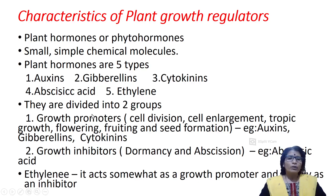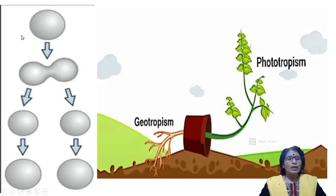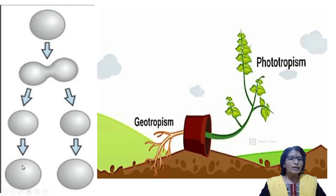Plant hormones are divided into two groups: growth promoters and growth inhibitors. Auxins, gibberellins and cytokinins are growth promoters. Their activities include cell division, cell enlargement, tropic growth, flowering, fruiting and seed formation. In cell division, one mother cell divides into two daughter cells. These smaller young cells gradually increase their size to reach the original size, which is cell enlargement.